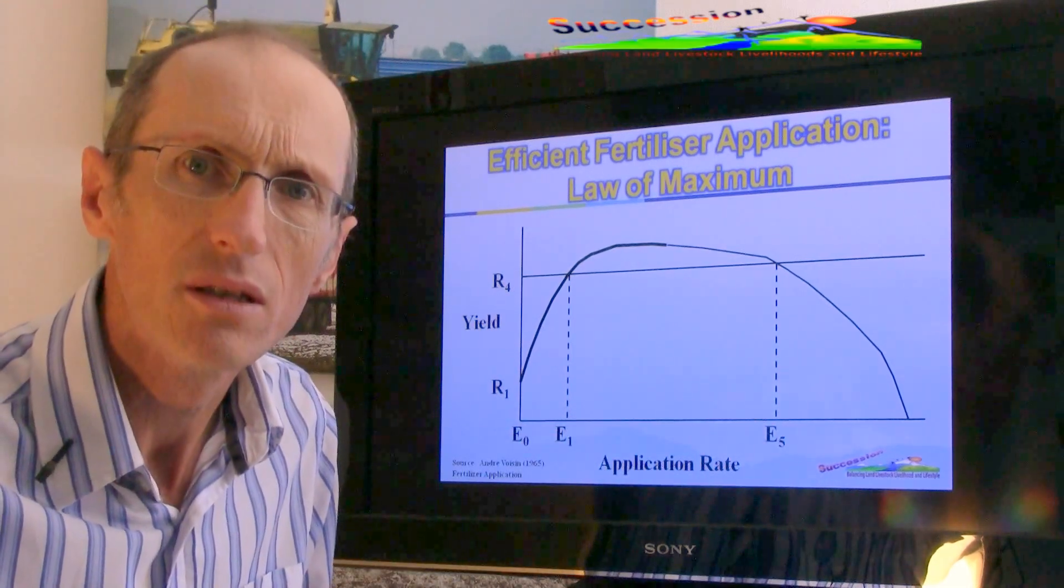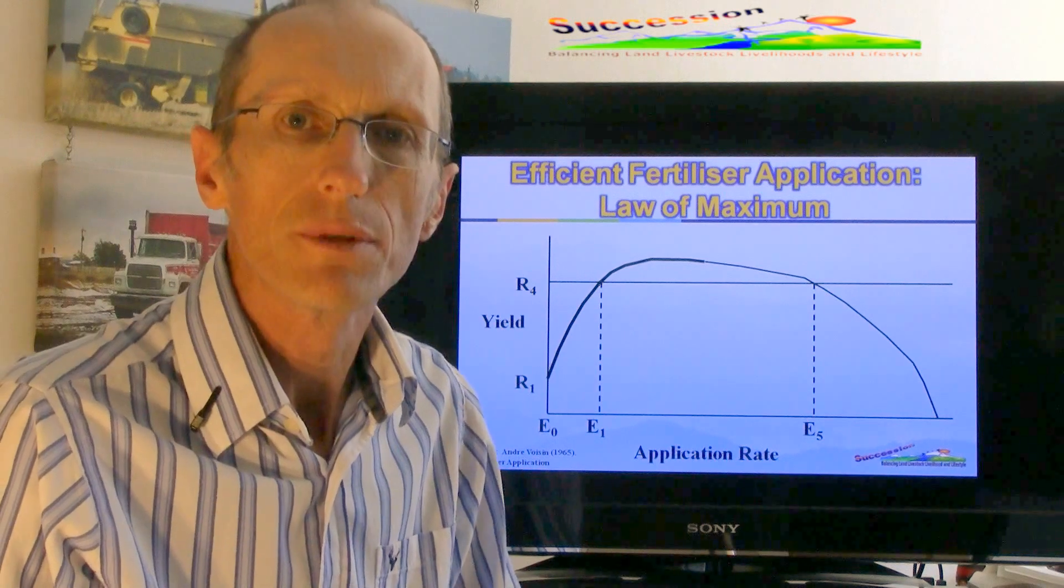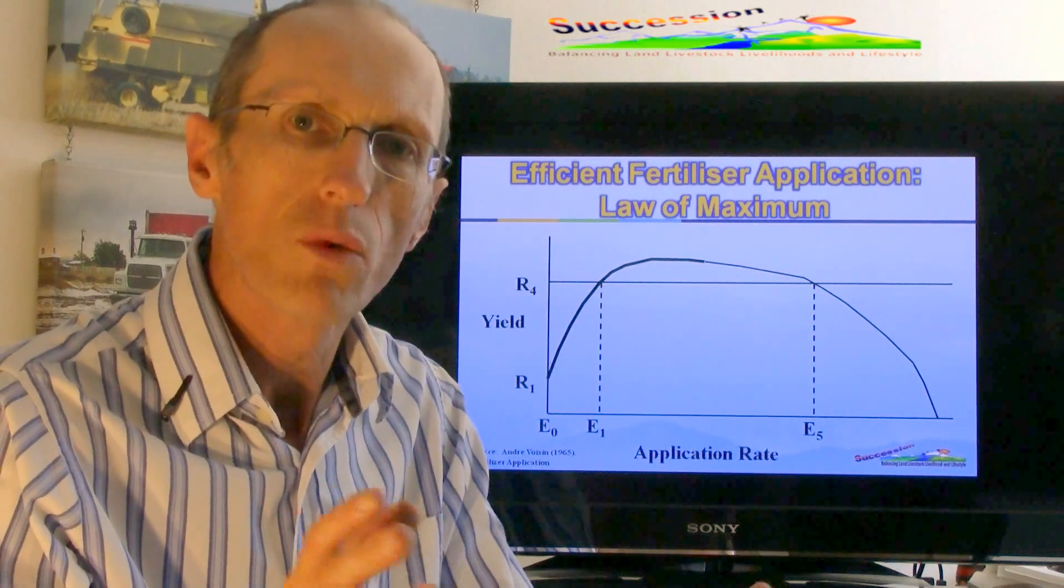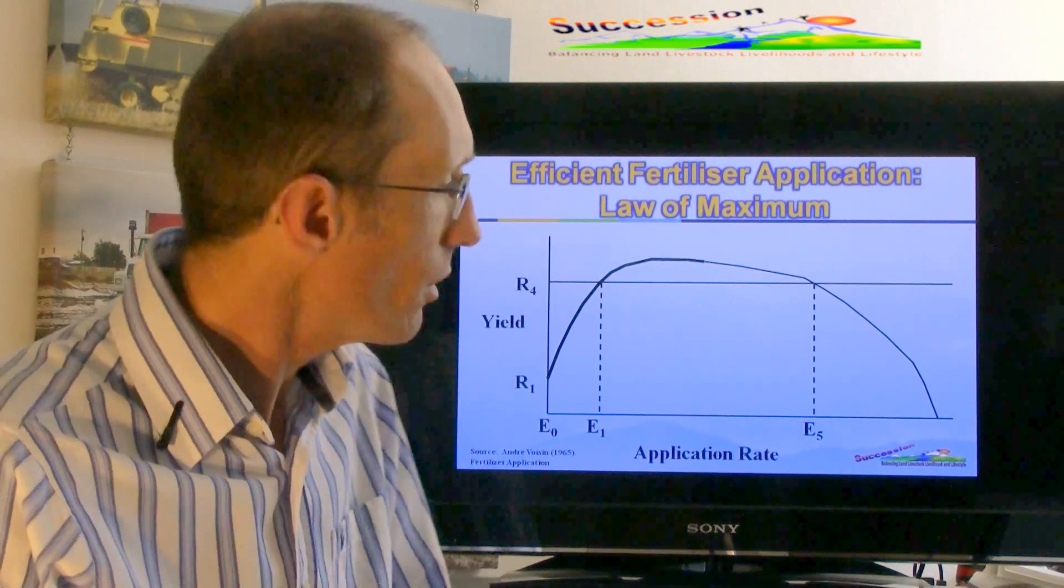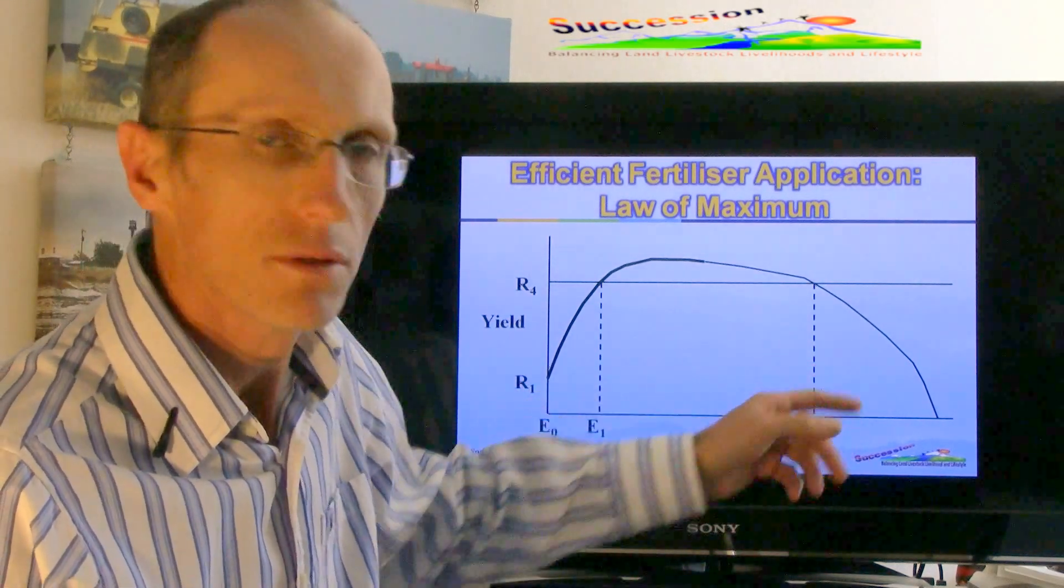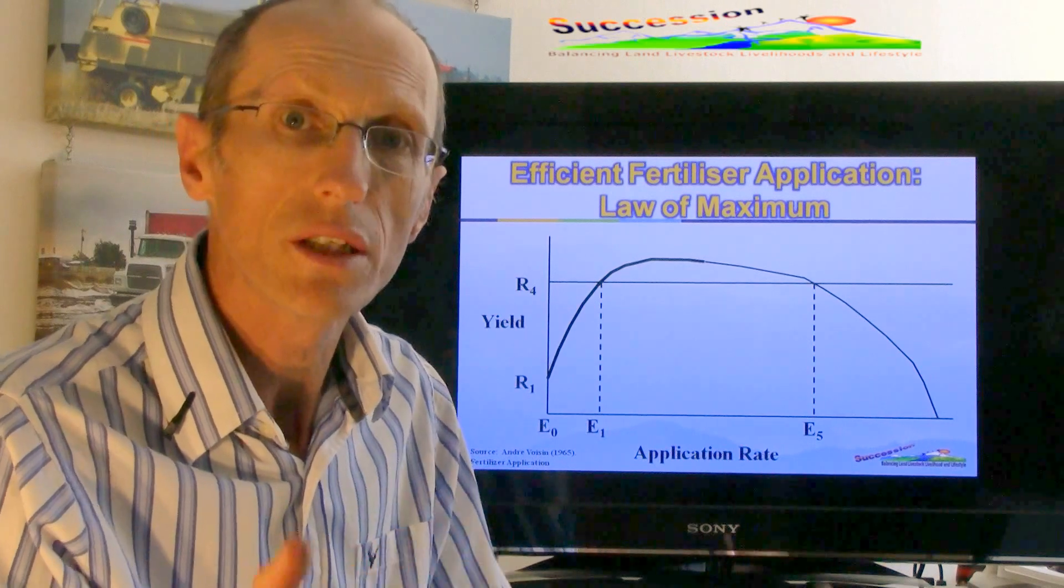Well how does that work? It's called the law of maximum. And that's when the excess of one element, like nitrogen for example, prevents the uptake of other nutrients in the soil. And the result is that your crop production declines, what's called hitting the wall.